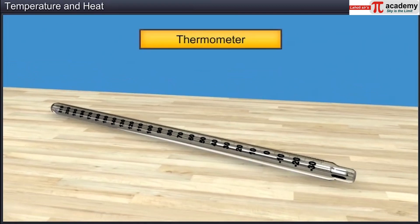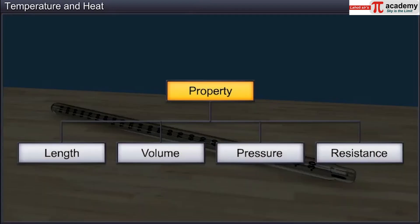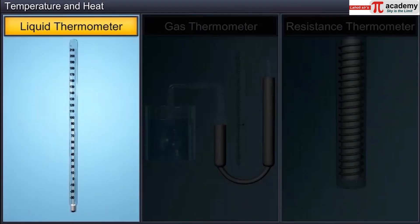We use a thermometer to measure the temperature of a body. While constructing a thermometer, we need to identify a specific property of a substance that varies linearly with the temperature. In case of a liquid thermometer, the length of the mercury column changes linearly with the change in temperature.